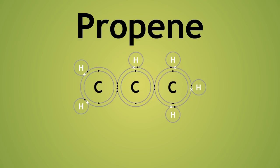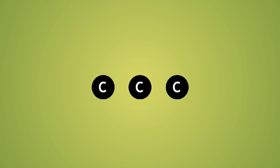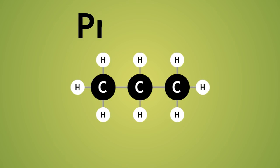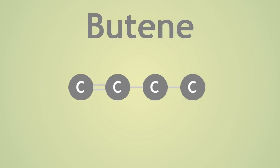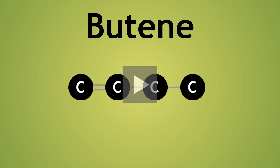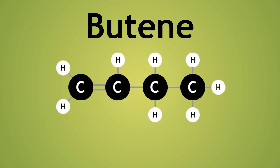Since we now understand the covalent bonding in these molecules, let us replace the dot-cross diagram with the structural formula. Here is the structural formula of propene. Pause the video now and try to complete this structural formula of butene. Here is the completed structure. Did you get it right?